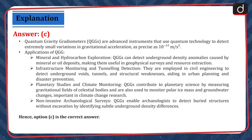The correct answer is option C. Quantum gravity gradiometers or QGGs are advanced instruments that use quantum technology to detect extremely small variations in gravitational acceleration, as precise as 10 raised to the power minus 15 meter per second square. Application 1: Mineral and hydrocarbon exploration — QGGs can detect underground density anomalies caused by mineral or oil deposits.